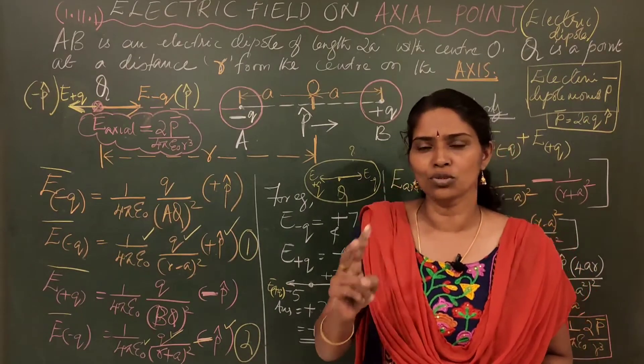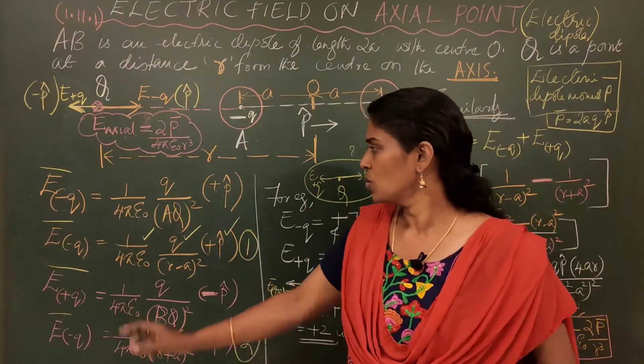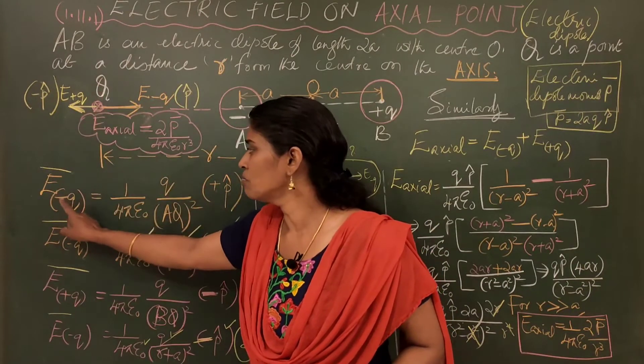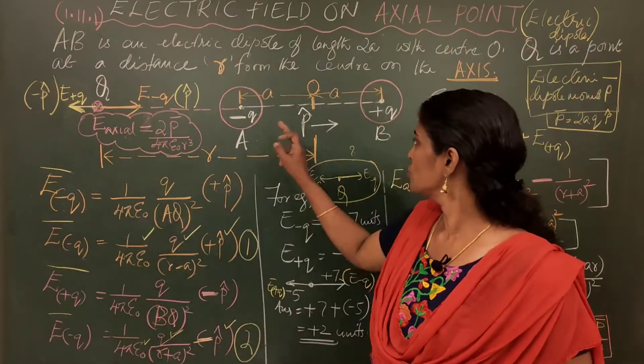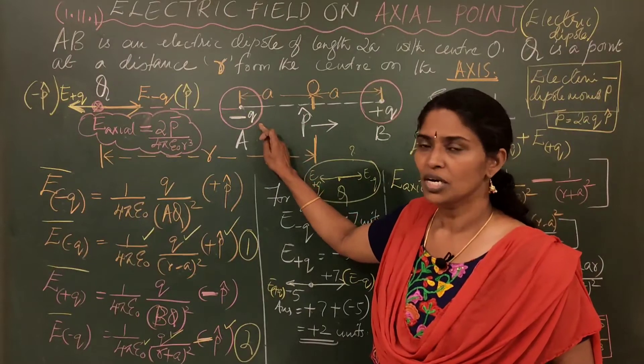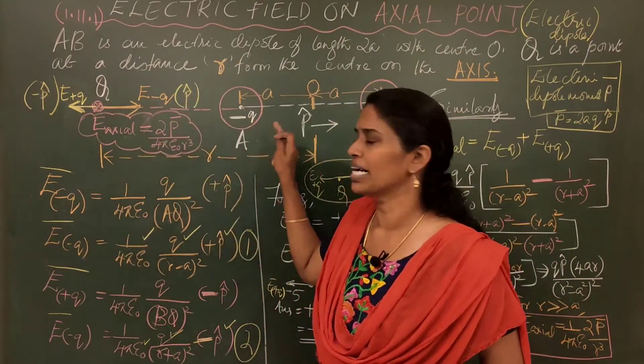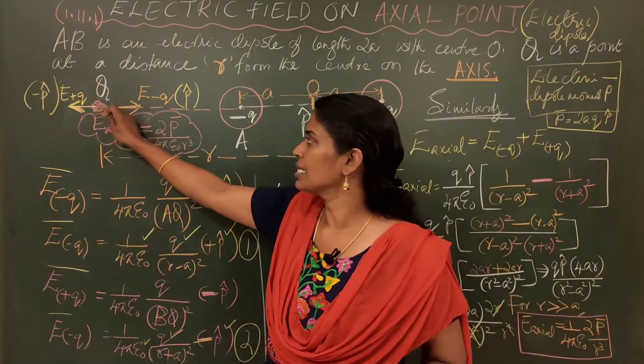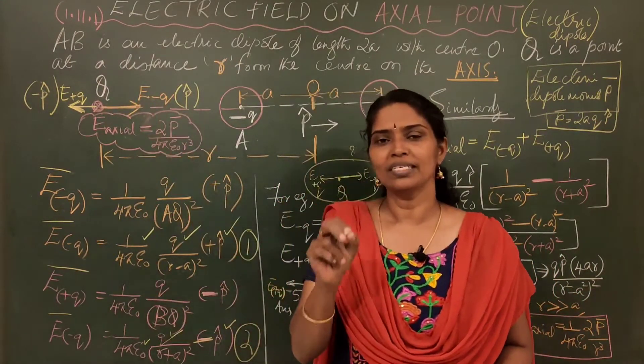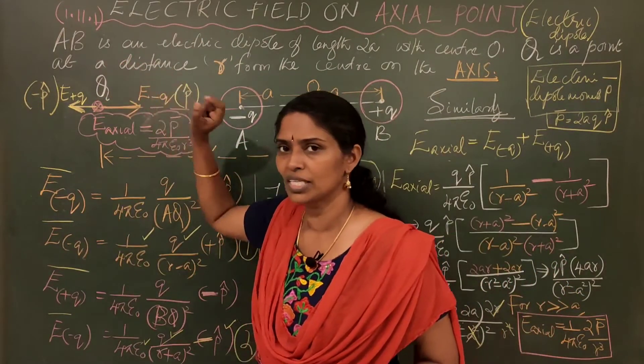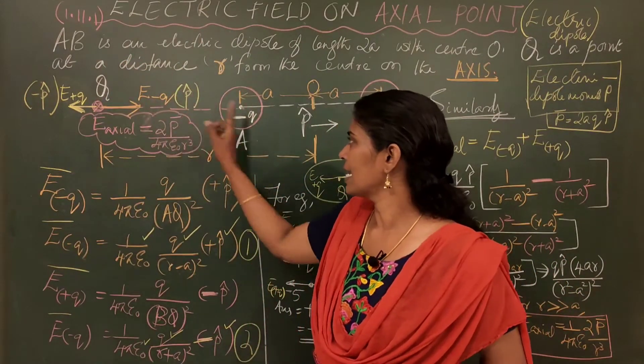First, find out what is the electric field at Q due to minus Q. Minus Q means this is the minus Q charge. What is the electric field at Q due to minus Q? You know to find electric field at the point Q, we place a unit test charge at Q. Place a unit positive charge at that point. It attracts minus Q.